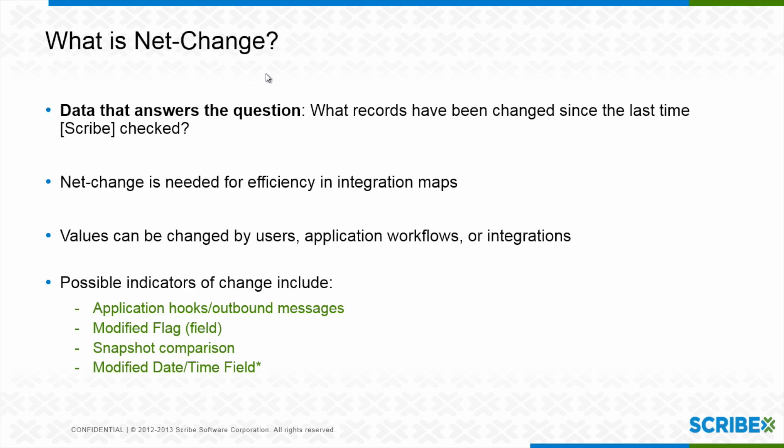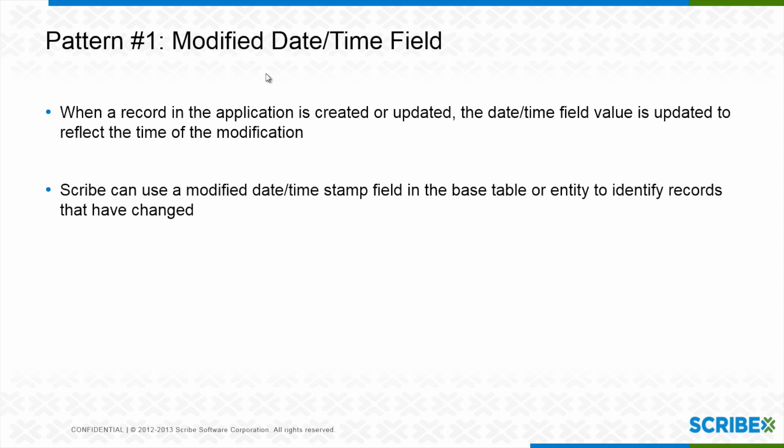There are a couple different ways that you can find that change. You can have an application hook or message to send Scribe when your data has changed — that's kind of an event-based way of doing it. You could have a field that's flagged or triggered to be a certain value, like 'needs integration equals true.' You could do snapshots, but I want to talk today about a last modified date-time stamp, something that a lot of systems have built into them.